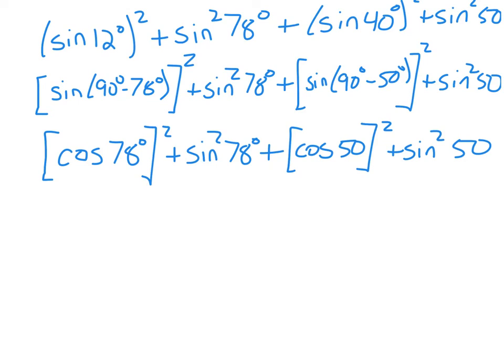And so now what we have is - I'll rewrite these, well it doesn't really matter you guys can figure it out - so this is really cosine squared of 78 plus sine squared of 78 plus cosine squared of 50 plus sine squared of 50.